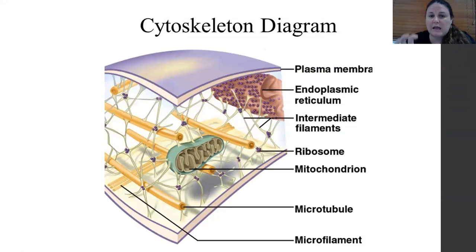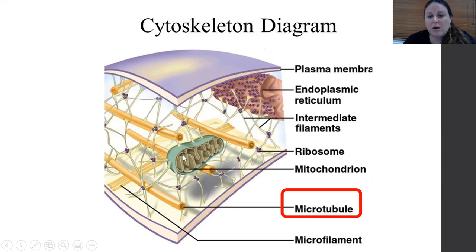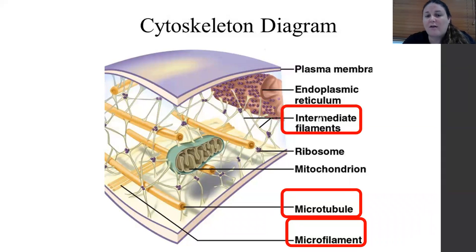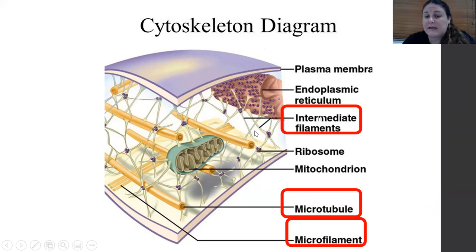Looking at a cell image, you can see the different kinds of cytoskeleton: microtubules are the hollow tubes — the largest — made out of tubulin; microfilaments are the thinnest, made out of a protein called actin; and intermediate filaments provide structural support and anchor organelles.